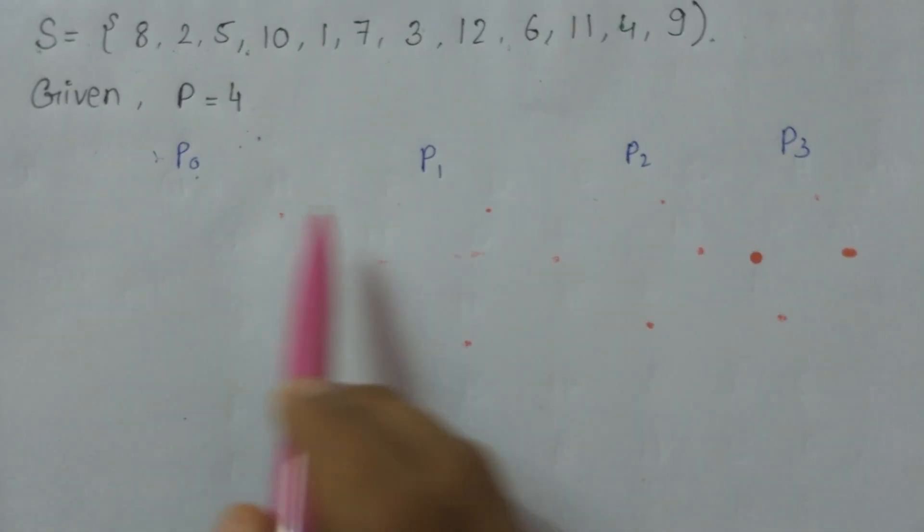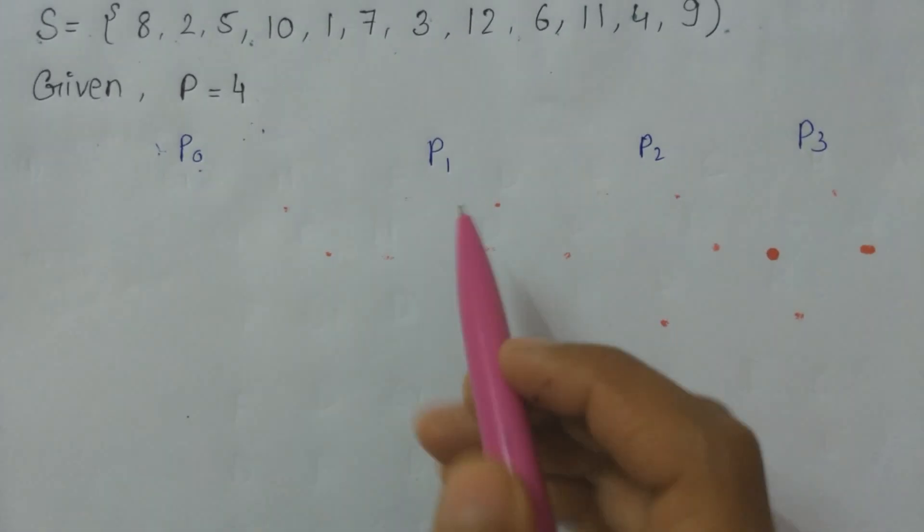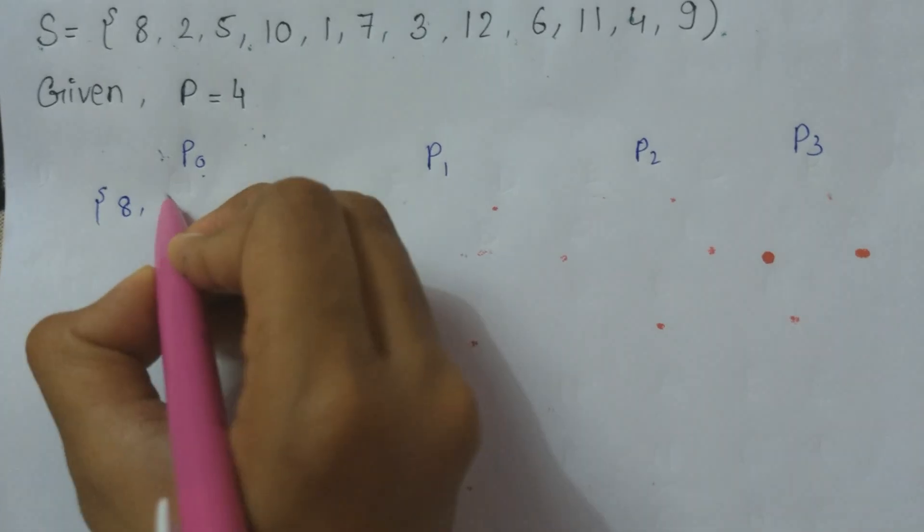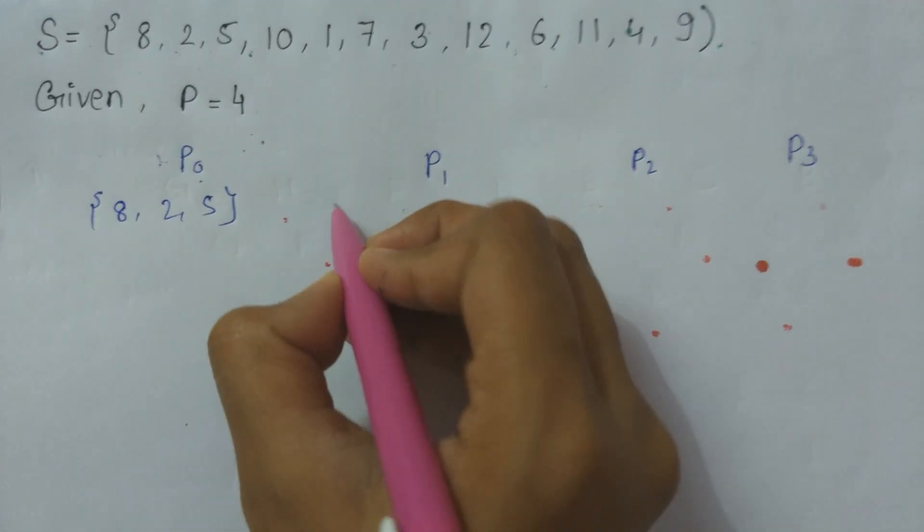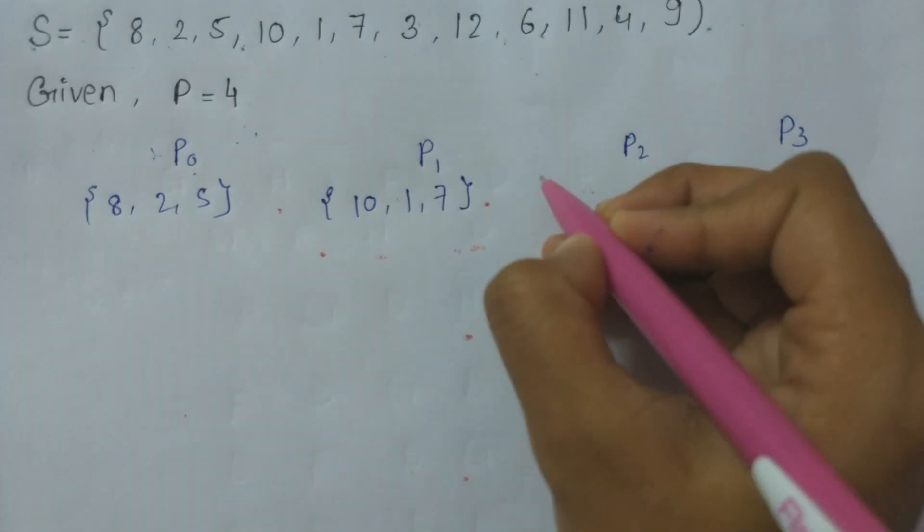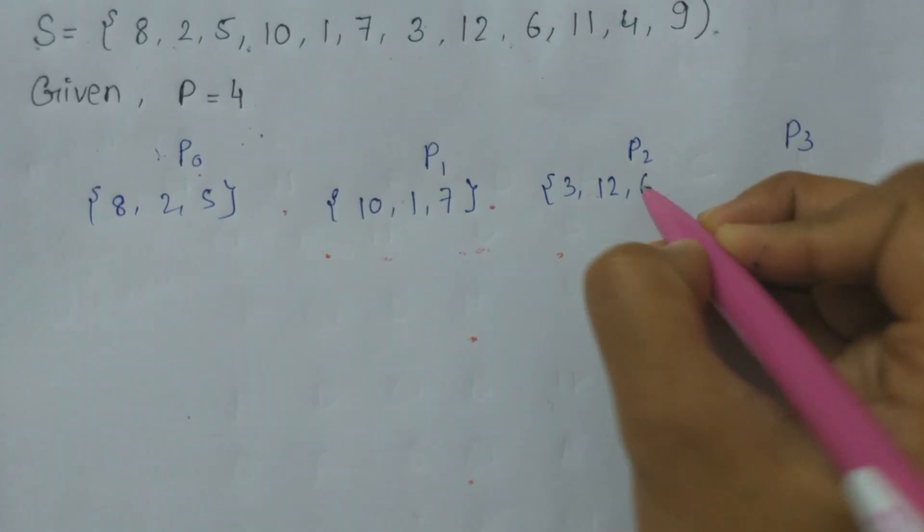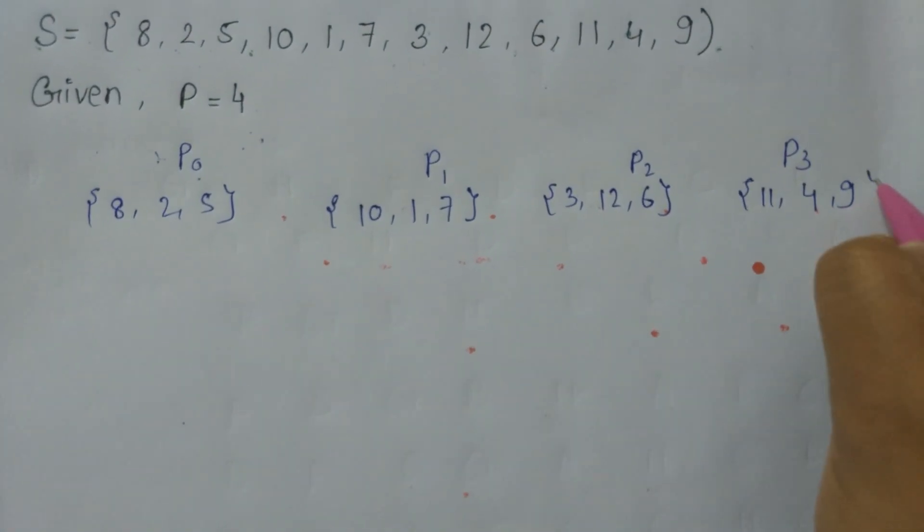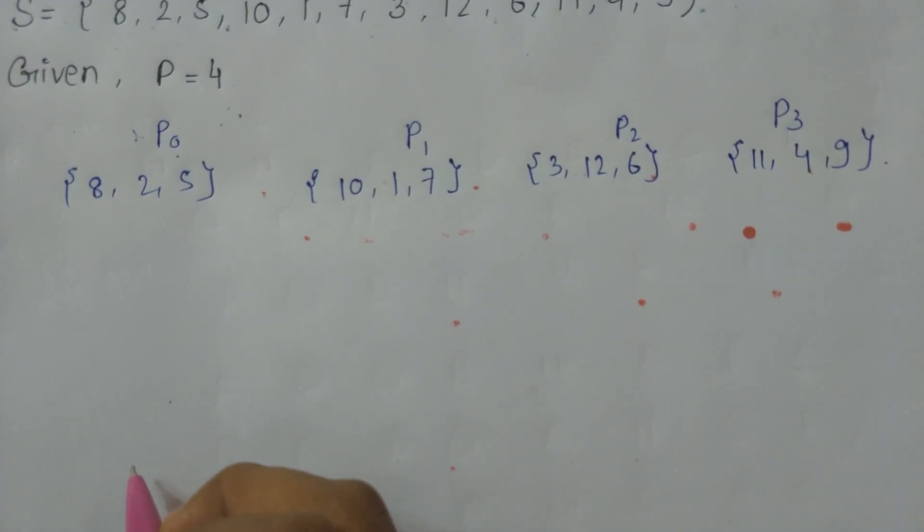We will divide it into four partitions. The first partition will contain 8, 2, 5. The second one will contain 10, 1, 7; third: 3, 12, 6; and fourth: 11, 4, 9. The process is very simple.